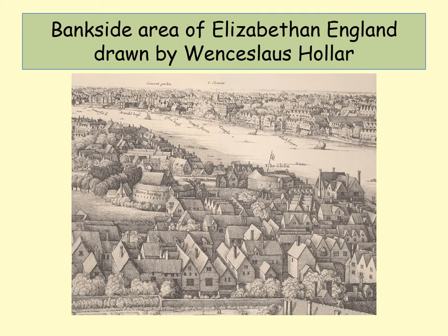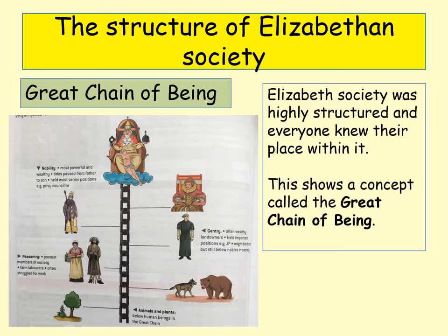This shows you a picture of what's called the Bankside area of Elizabethan England, drawn by Wenceslas Hollar. You can see some of the theatres here — the Globe Theatre, for example, stands out. This area was full of culture, particularly towards the middle and end of Elizabeth's reign. The first thing to be aware of is that Elizabethan society was really highly structured.